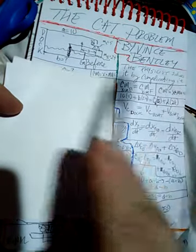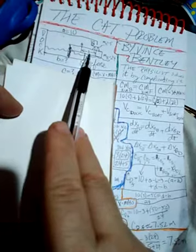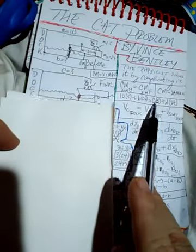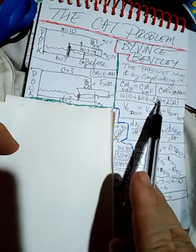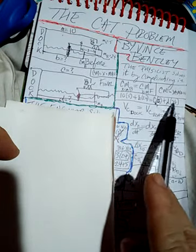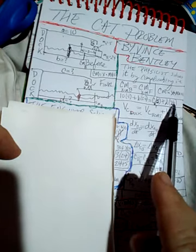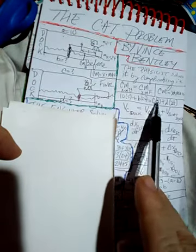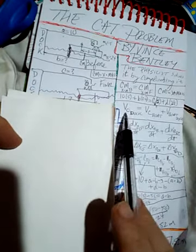The physicist sets up the center of mass equation. Before: 10×5 + b×24. After: c×5 + d×24. These must be equal since there are no external horizontal forces. He also uses the Galilean relative velocity relation: velocity of the cat relative to the dock equals the velocity of the cat relative to the boat plus the velocity of the boat relative to the dock.